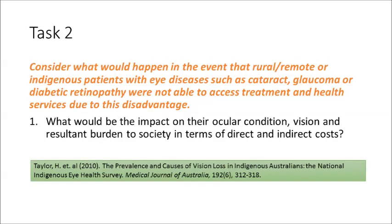Your final task for module three is to consider what would happen in the event that rural, remote, or indigenous patients with eye diseases — for example, cataract, glaucoma, or diabetic retinopathy — were not able to access treatment and health services due to their disadvantage. What would be the impact on their ocular condition, their vision, and the resultant burden to society in terms of direct and indirect costs?